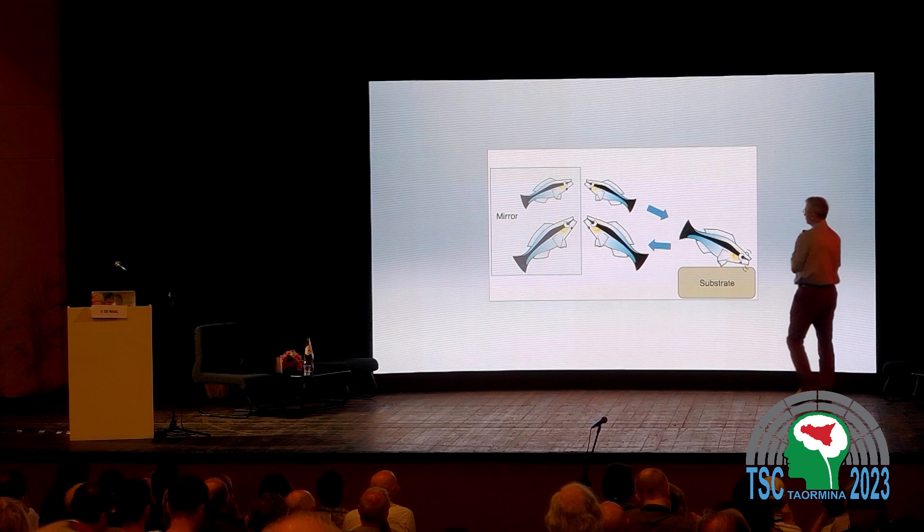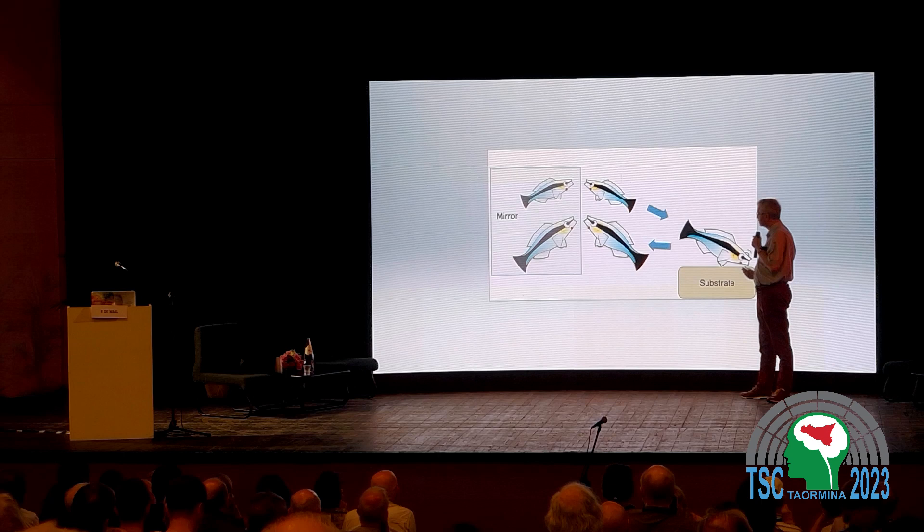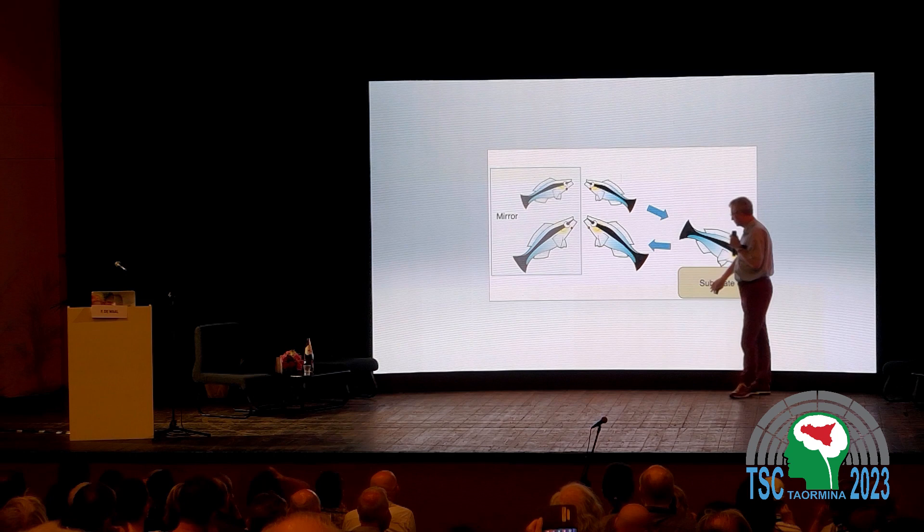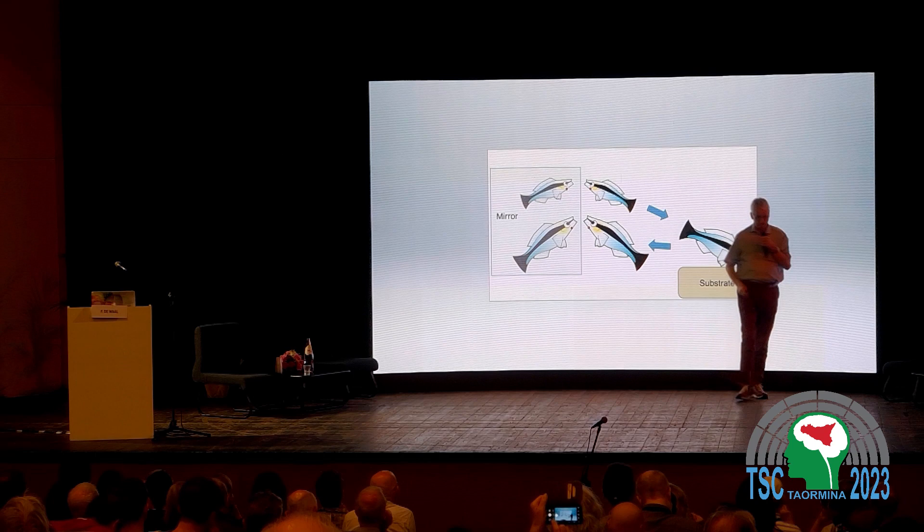The fish were then given a mark test. They can't use hands or a trunk to clean themselves, so what they do is see themselves in the mirror, go to a substrate like a rock and rub the mark off, then return to the mirror to check what has happened. This is how the fish have been tested.